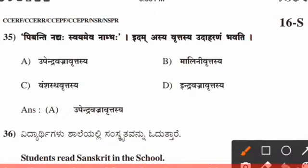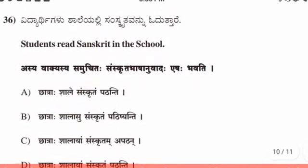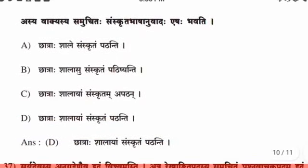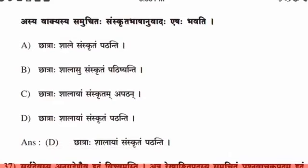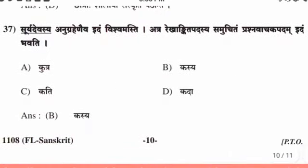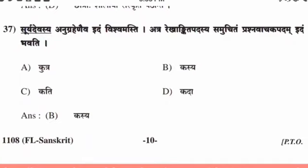Thirty-fifth question, the right answer is option A. Thirty-sixth question, the right answer is option D. Thirty-seventh question, the right answer is option B.